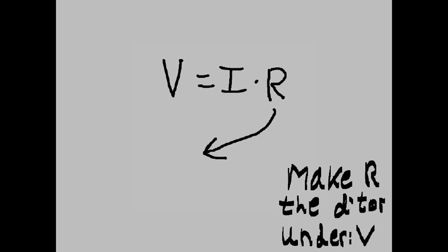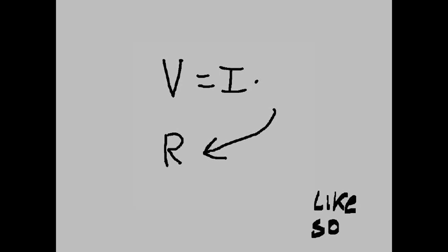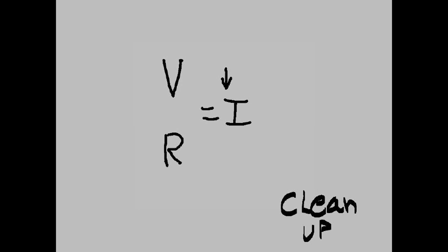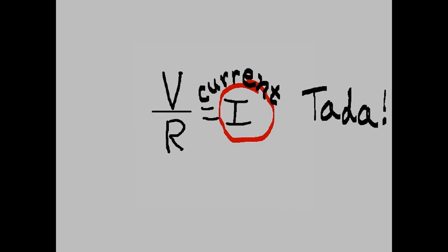Make R the denominator under V. Like so. Let's clean up. And current equals V over R. Ta-da!